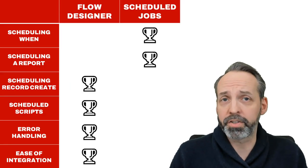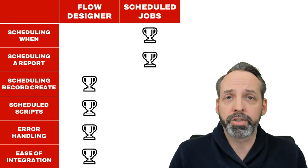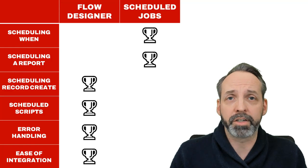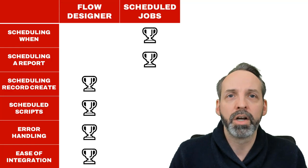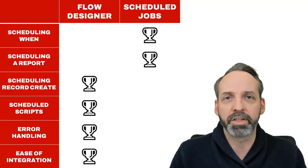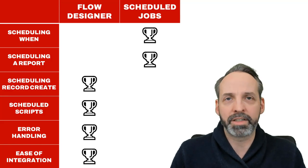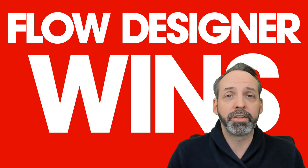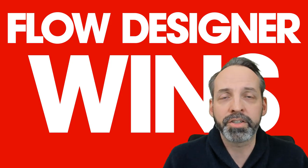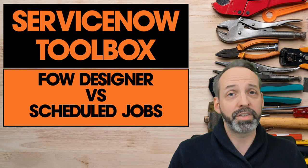Now let's take it to the judges' scorecards. If you need to schedule a report, Scheduled Jobs is still the dominant feature. When it comes to scheduling, Scheduled Jobs has a slight advantage with the scripted condition and the time zone picker. But in all other areas, Flow Designer completely dominates — which is why Flow Designer is where I go first if I need to do something on a scheduled basis. Hope this provided you with some wisdom, and remember, I'm still willing to pay for help in generating content for this playlist. Thanks again and we'll see you on the next one.